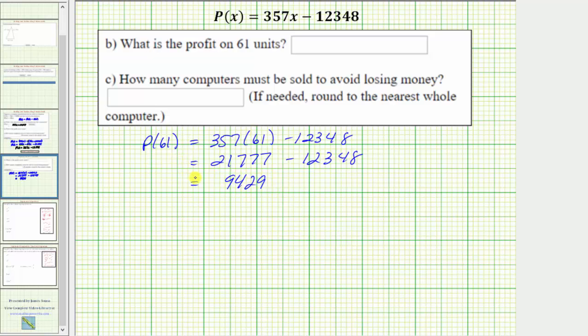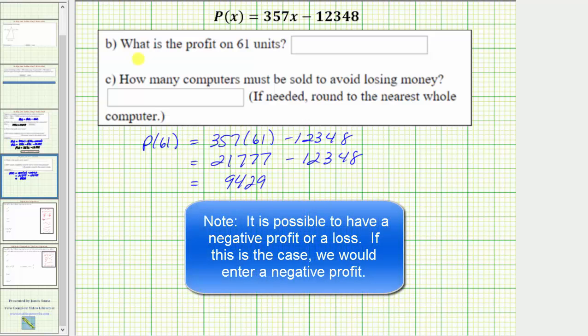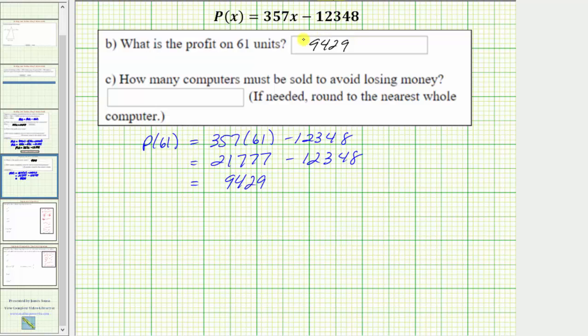And because this is profit, the units here would be dollars. So for part b, what is the profit on 61 units? We'll enter $9,429 so we'll include the dollar sign. Let's also put .00.